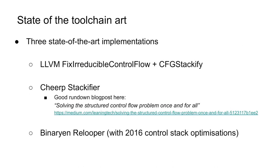So what are toolchains doing in the real world right now? As far as I'm aware, there are three main implementations which take a fairly arbitrary IR and transform it in the course of compiling to WebAssembly. These all work slightly differently, but the top level idea is the same: inserting indirections to get rid of multi-entry loops. The CHIP implementation specifically is accompanied by a very nice blog post which goes into a lot of the theoretical detail of how and why this always works.